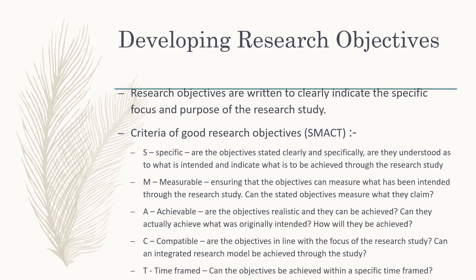Now let's move to developing research objectives. Once you have identified your problem statement, you have to write your objectives. Research objectives are written to clearly indicate the specific focus and purpose of the research study. A good research objective should follow the SMACT criteria: S means Specific — the objective should be clear and specific; M means Measurable; A means Achievable — the objective must be achievable; C means Compatible — whether the objective is in line with the focus of the research study; and T means Time frame — can the objective be achieved within a specific time frame?